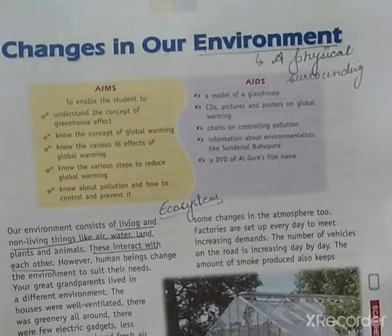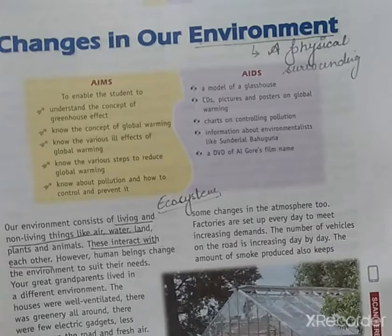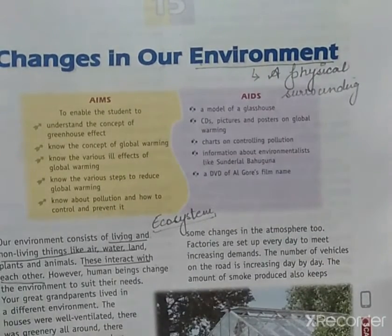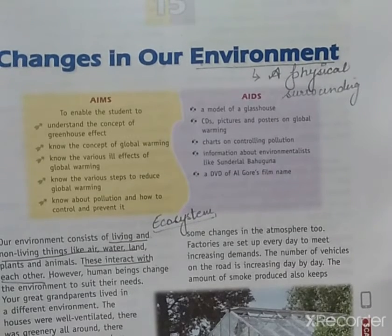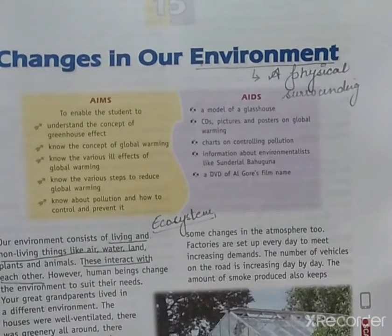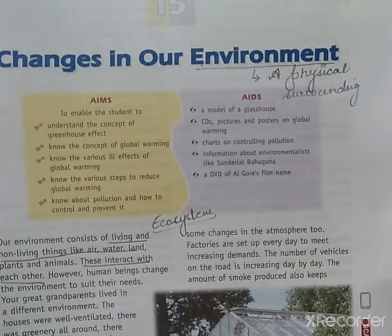But as humans interfered with the surrounding, things got changed and the atmosphere got changed. If I compare today, the air is so much polluted. You can also write some points which you have observed nowadays. All these things — pollution and rise in temperature — cause human life to be affected very much.